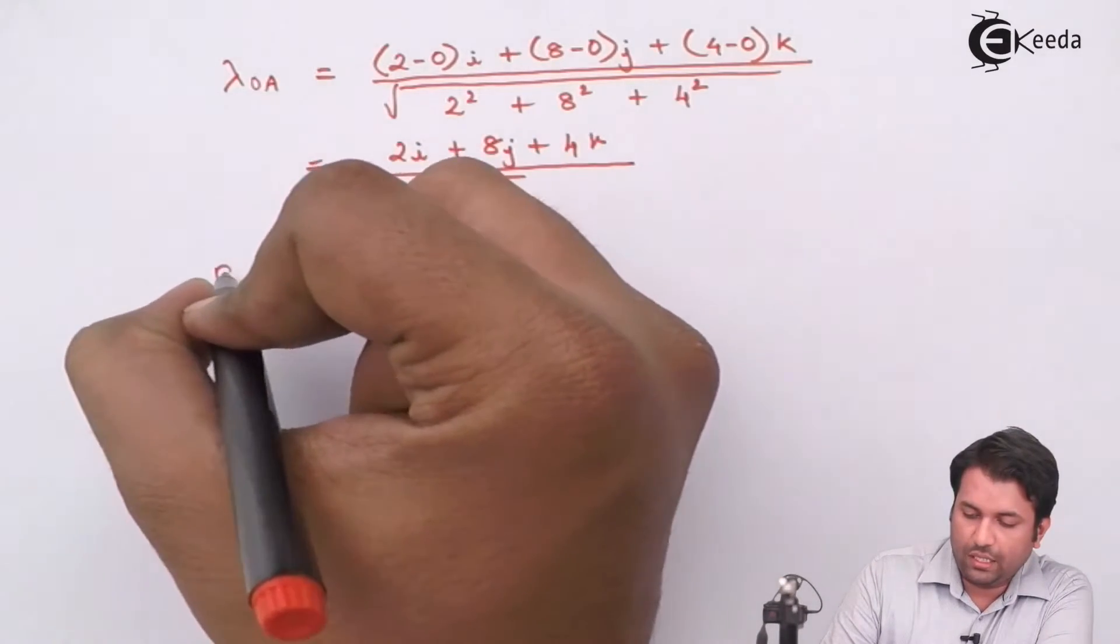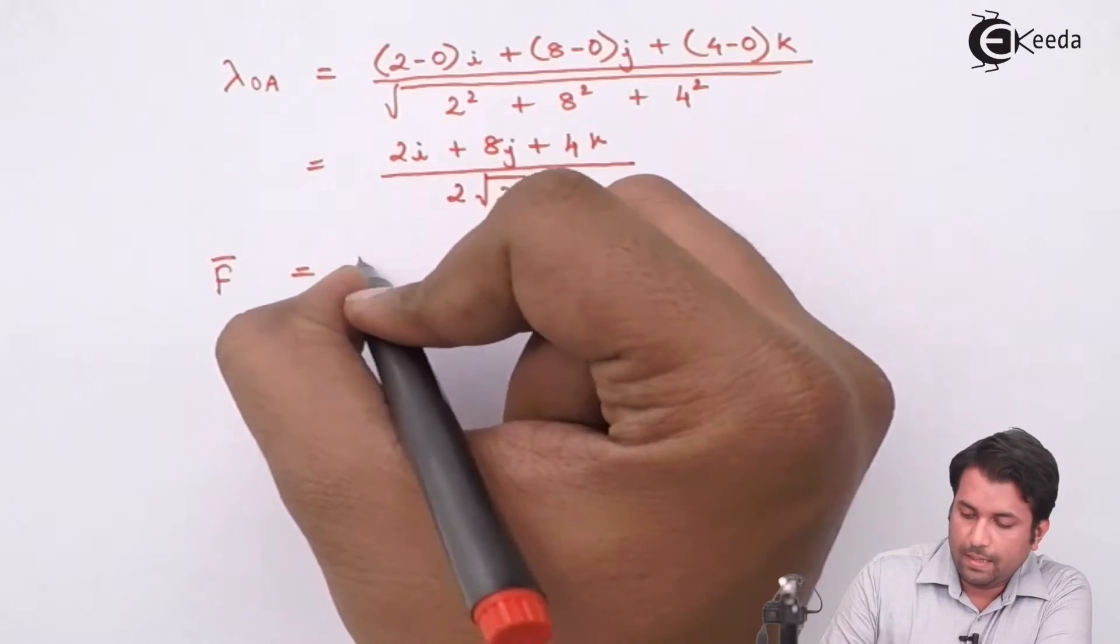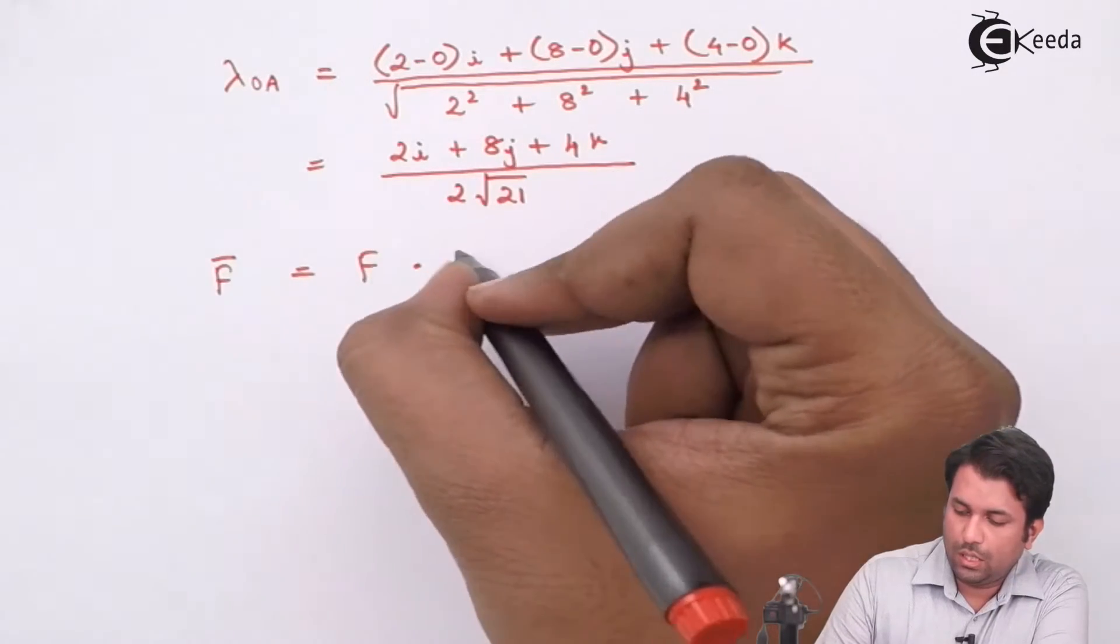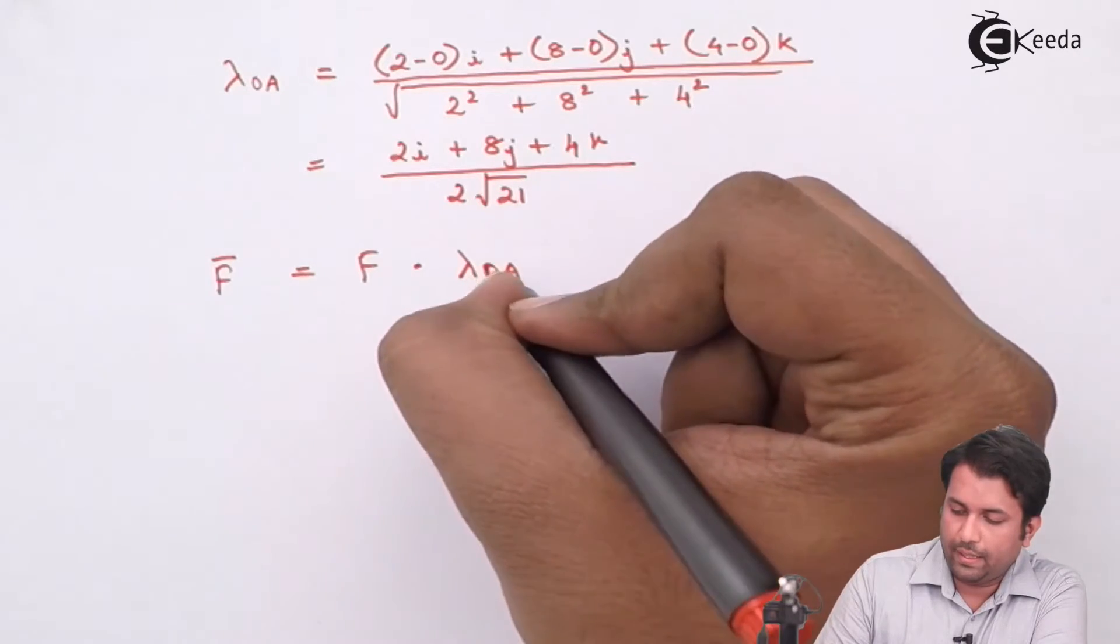So the force vector F is magnitude dot product OA.